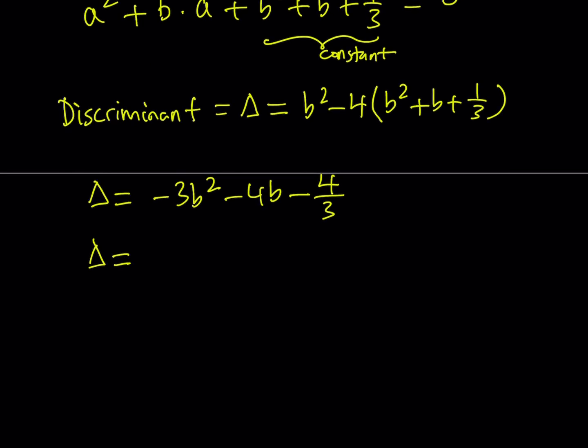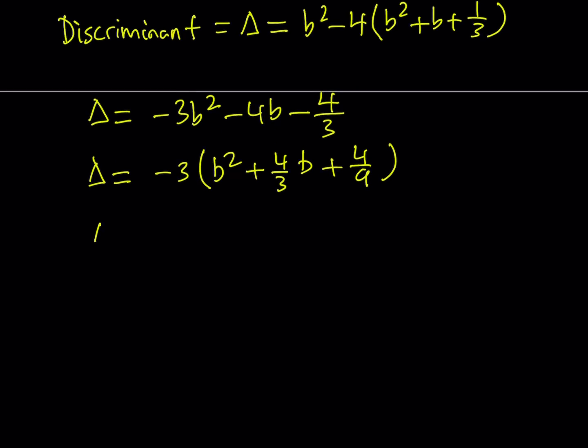Now, in order to understand what's going on here, I'll take out a negative 3, and then inside the parentheses I should be getting b squared plus 4 thirds of b plus 4 ninths. Now, notice that the expression inside the parentheses can be written as a perfect square. Why? Because it's equivalent to b plus 2 thirds quantity squared. In other words, if you have anything like x squared plus 2xy plus y squared, that is considered a perfect square. In other words, x plus y quantity squared. So that's all we did. And what does that mean?